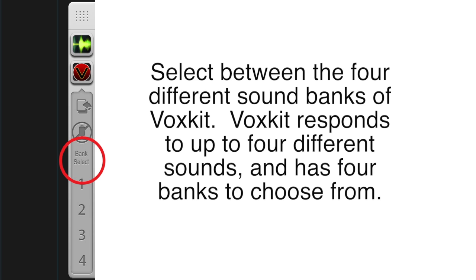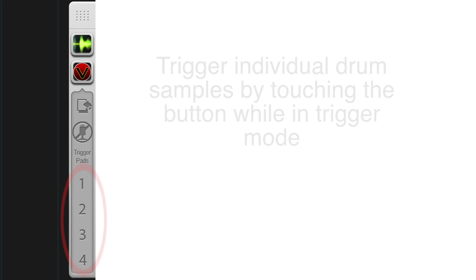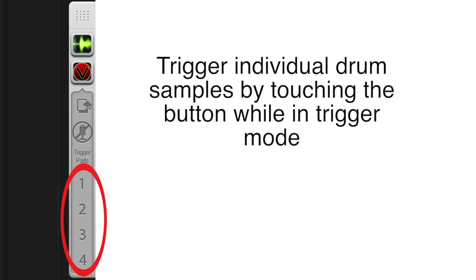A second button toggles between selecting a bank or triggering a pad. VoxKit has four banks of four pads each. Select them by tapping the appropriate bank number. When switched into trigger mode, you can also play the individual samples or MIDI notes.